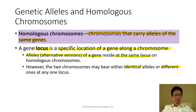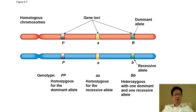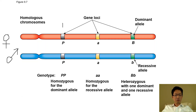Let's take a look at a picture. The red chromosome is from your father and the blue one is from your mother. You can see that the P gene has two big P alleles at the same locus, so we call it homozygous dominant.